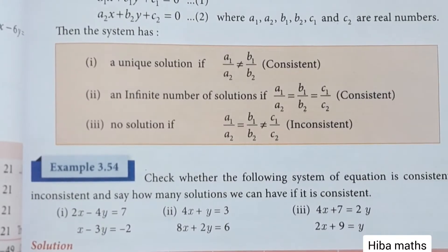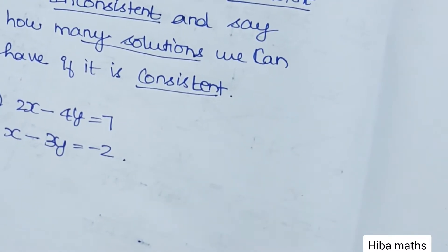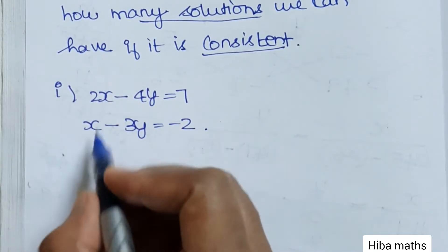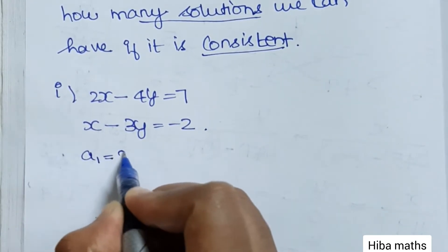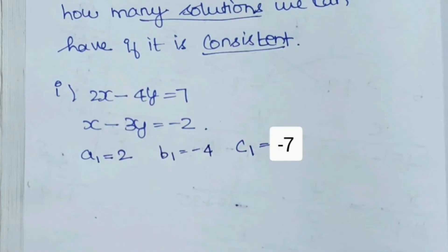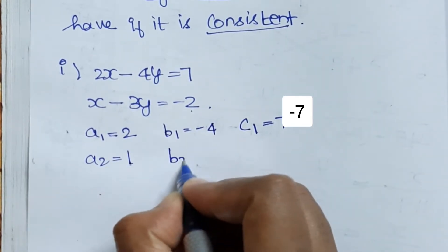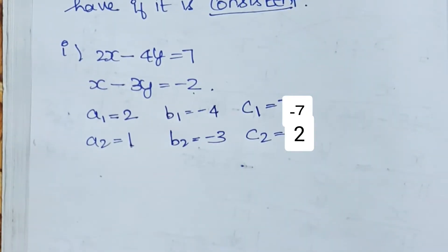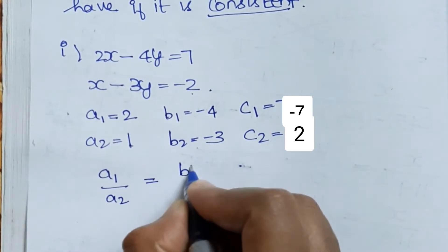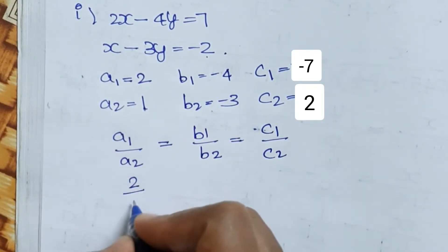First subdivision: 2x minus 4y equals 7, and x minus 3y equals minus 2. So A1 equals 2, B1 equals minus 4, C1 equals minus 7. For the second equation, A2 equals 1, B2 equals minus 3, C2 equals 2. Now we check the condition: A1/A2 equals B1/B2 equals C1/C2. Substituting, A1/A2 equals 2/1.